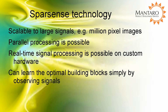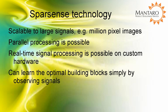The patent pending technology developed by SparseSense uses state of the art sparse representation based algorithms to solve real world problems. SparseSense algorithms are unique in that they are able to work efficiently in a highly parallel processing environment. This parallelism makes it possible to quickly process million pixel images, making SparseSense technology ideally suited for real-time signal processing applications. SparseSense algorithms are also able to learn the optimal set of sparse building blocks for a signal type by observing signals without any supervision.